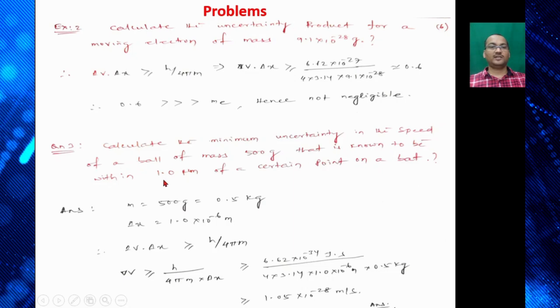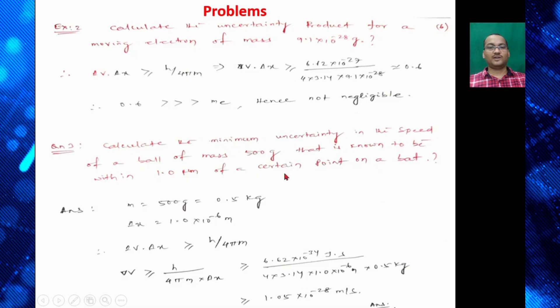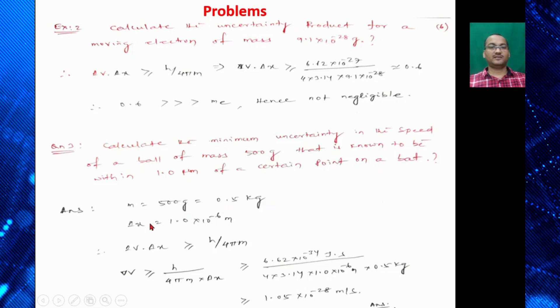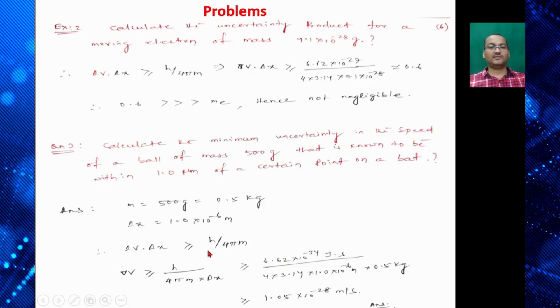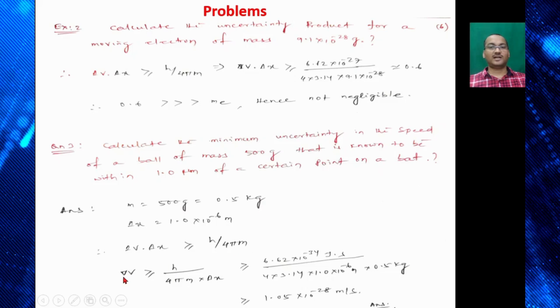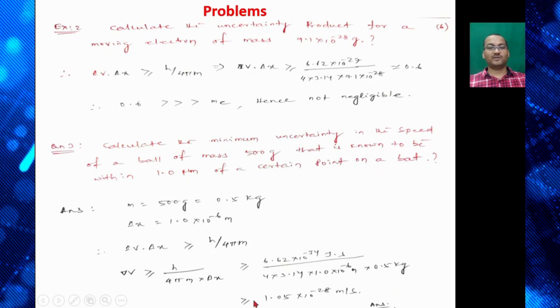The next question: calculate the minimum uncertainty in the speed of a ball of mass 500 gram that is known to be within 1 micrometer of a certain point on a bat. So mass given 500 gram that is 0.5 kg and ΔX = 1.0×10⁻⁶ meter. So ΔV × ΔX ≥ h/4πm. So ΔV will be h/4πm × ΔX. So if we put the value of π, m and ΔX, it is found to be 1.05×10⁻²⁸ meter per second.